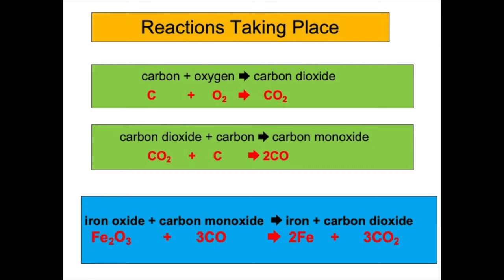Looking at the overall equation, iron oxide loses oxygen — it's reduced to form iron. What causes this reduction? The reducing agent carbon monoxide. The carbon monoxide gains oxygen to form carbon dioxide, so the carbon monoxide is oxidized. Both the chemical and word equations are provided here, and if you are a higher GCSE student you would be expected to write chemical equations to describe these reactions.